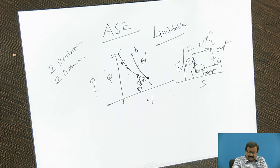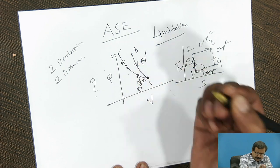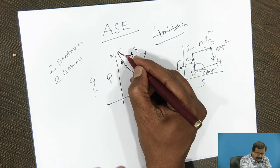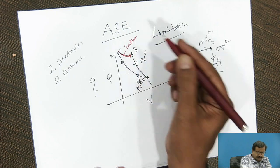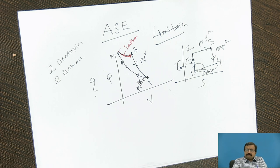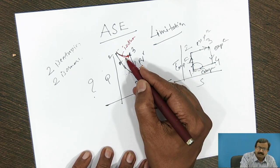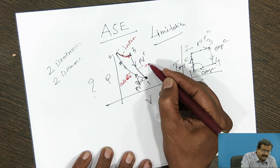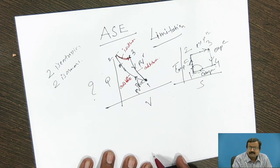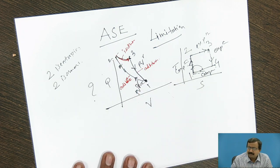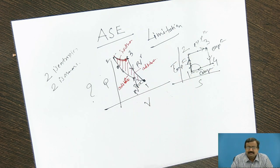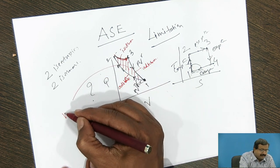Let us see what it means. On the PV diagram, process 1 to 2 and process 3 to 1 — if I connect one process here by an isothermal process, I get one adiabatic, one adiabatic, and one isothermal. It is a reversible adiabatic, so I can call it an isentropic process. If I connect these two points by an isothermal process, I get an area under the curve, which represents work done.